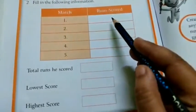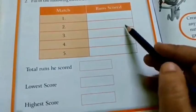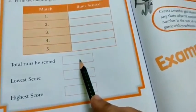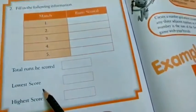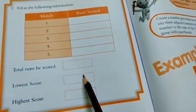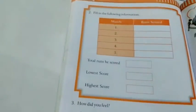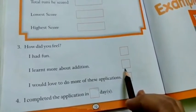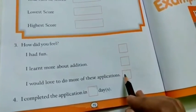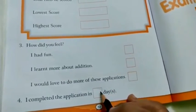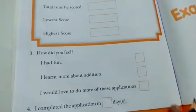For total runs, what you have to do? You have to add all these 5 matches runs. And then when you have to write the score, lowest score, highest score, you have to write. How did you feel? I had fun, tick. I learned more about addition, tick. I would love to do more of these applications, tick. I completed the application. In how many days you have completed, you have to write here.